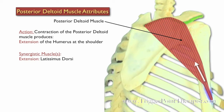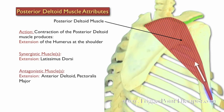The synergistic muscle for the posterior deltoid is the latissimus dorsi during extension. The antagonistic muscles for the posterior deltoid include the anterior deltoid and the pectoralis major.